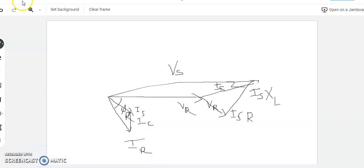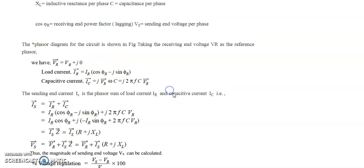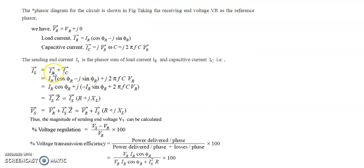Since we have considered the receiving end voltage as reference, the Vr vector equals Vr + j0, and load current Ir equals Ir·cos(φr) − j·sin(φr). The capacitive current Ic equals j·Vr·ωC, where ω can be written as 2πfC, multiplied by Vr. The sending end current Is equals Ir plus Ic. Elaborating these: the real part is Ir·cos(φr) and the imaginary part is −Ir·sin(φr) + 2πfC·Vr.